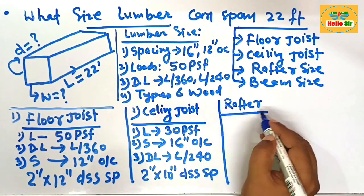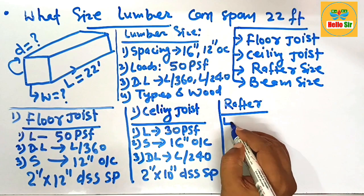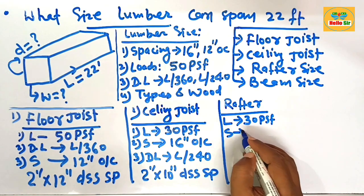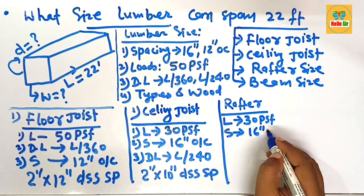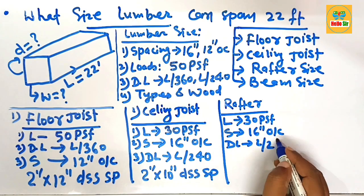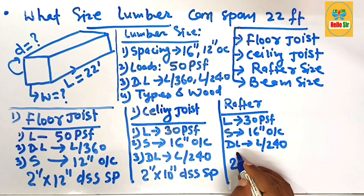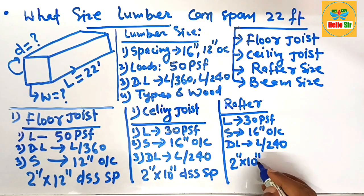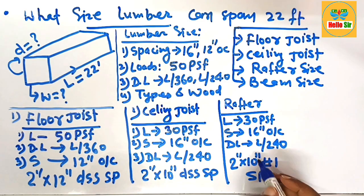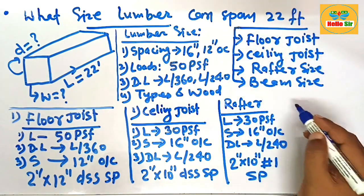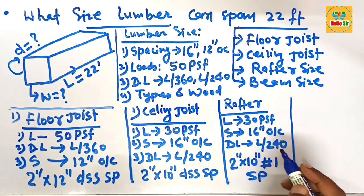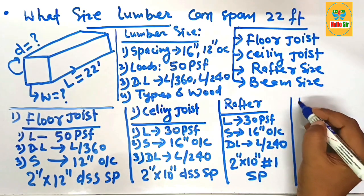For rafter size, the conditions are similar: a load of 30 pounds per square foot, spacing of 16 inches on center, and a deflection limit of L/240. For these conditions, you should use 2-inch by 10-inch Number 1 grade Southern Pine as the rafter to span 22 feet.